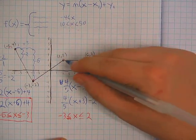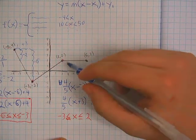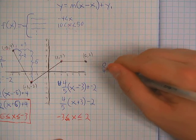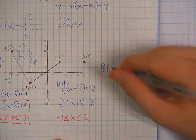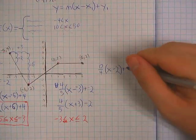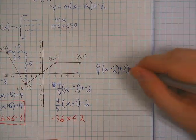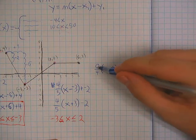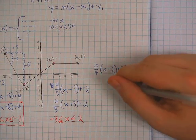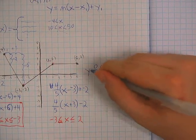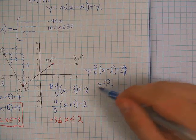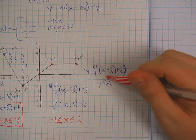The last segment is a horizontal line at y equals two. If you needed the slope, it's a rise of zero and a run of four, so zero over four equals zero. Using point-slope form with x-coordinate two and y-coordinate two: zero times x minus two plus two. Zero times anything is zero, so this simplifies down to just y equals two.